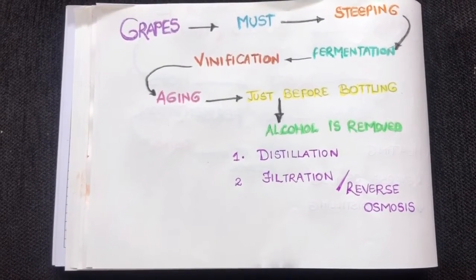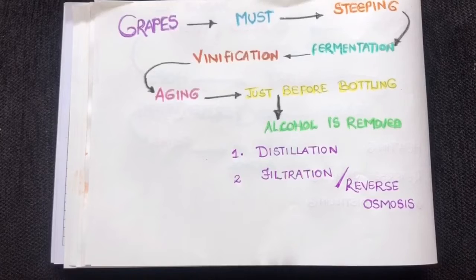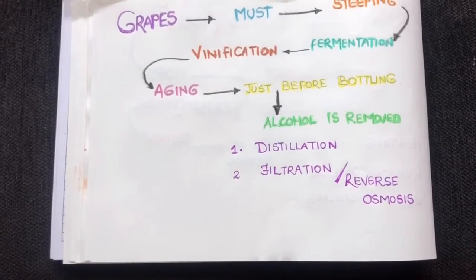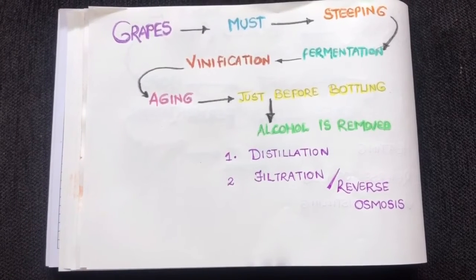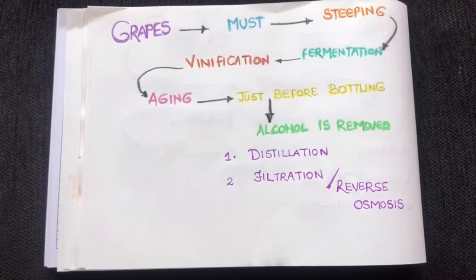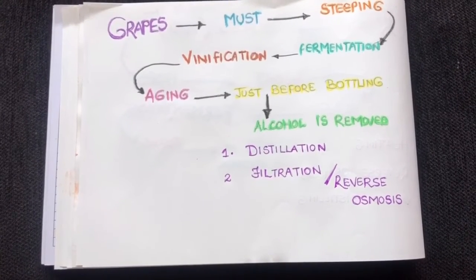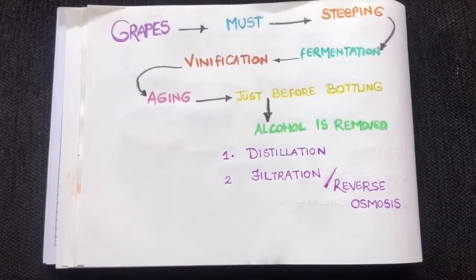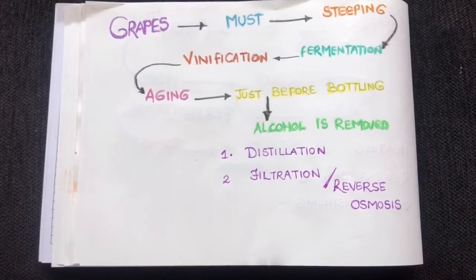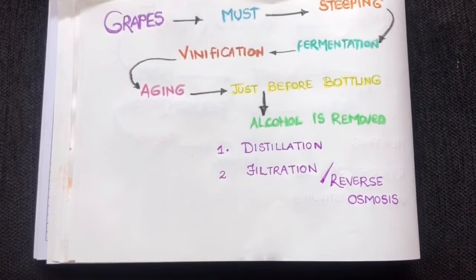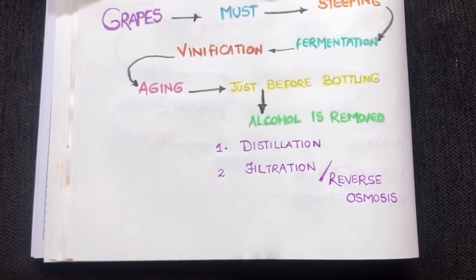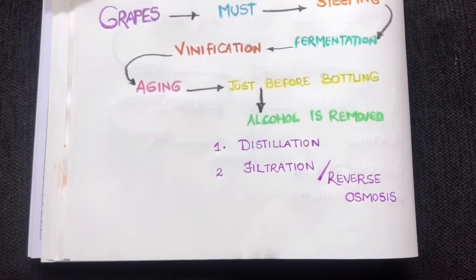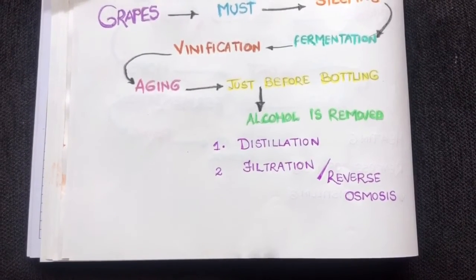So how does this happen? The process of grape and wine-making remains the same: must is made, skin maceration, fermentation, purification, and aging. But just before bottling, the alcohol is removed. How? By distillation, filtration, or reverse osmosis. Both reverse osmosis and distillation remove alcohol as a chemical compound from the wine.